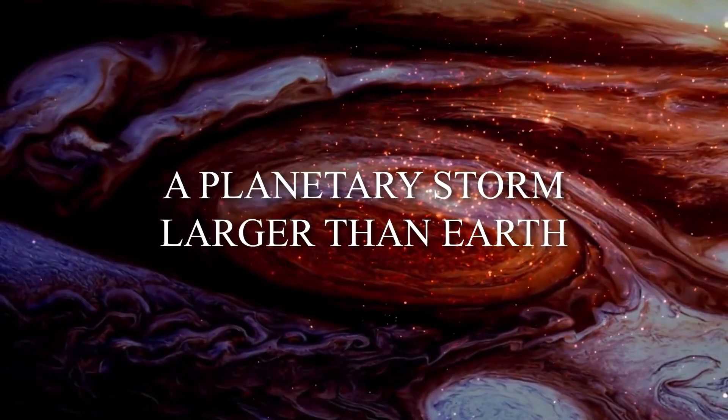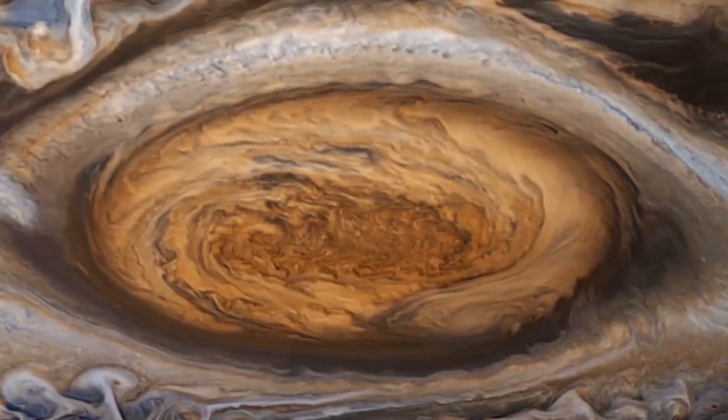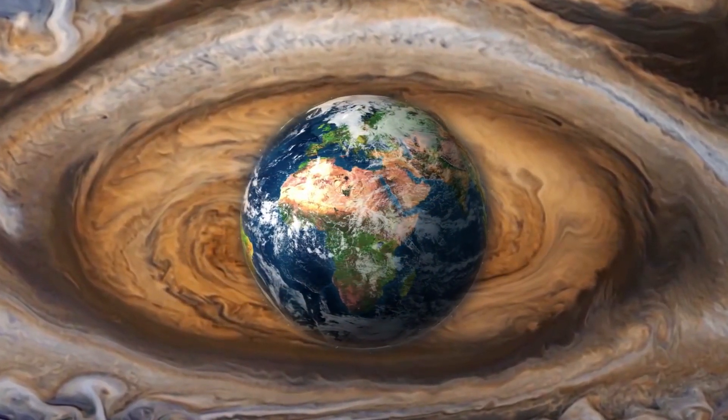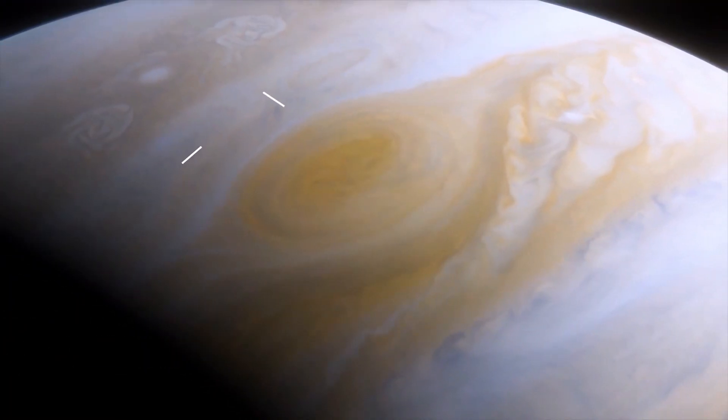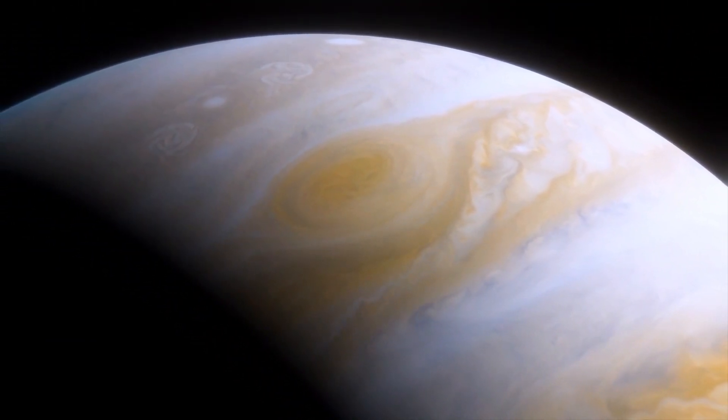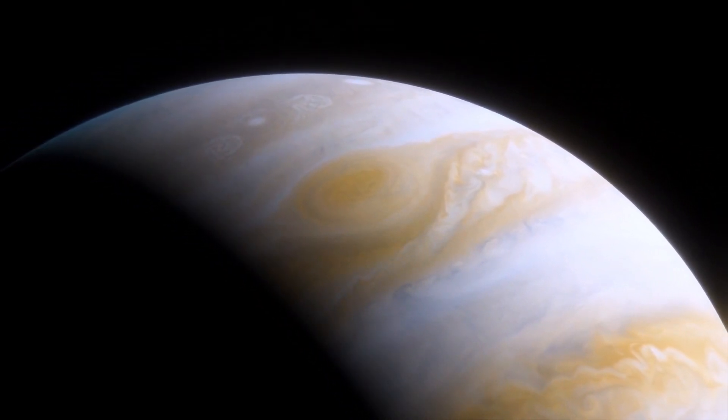Number two: A planetary storm larger than Earth. The Weather Channel would have a field day with Jupiter's Great Red Spot. This monstrosity is not only larger than our Earth, but it's a fierce storm that has billowed for centuries. Wind speeds of up to 425 miles per hour mean this counterclockwise-rotating hurricane isn't going to get a close-up visit anytime soon.